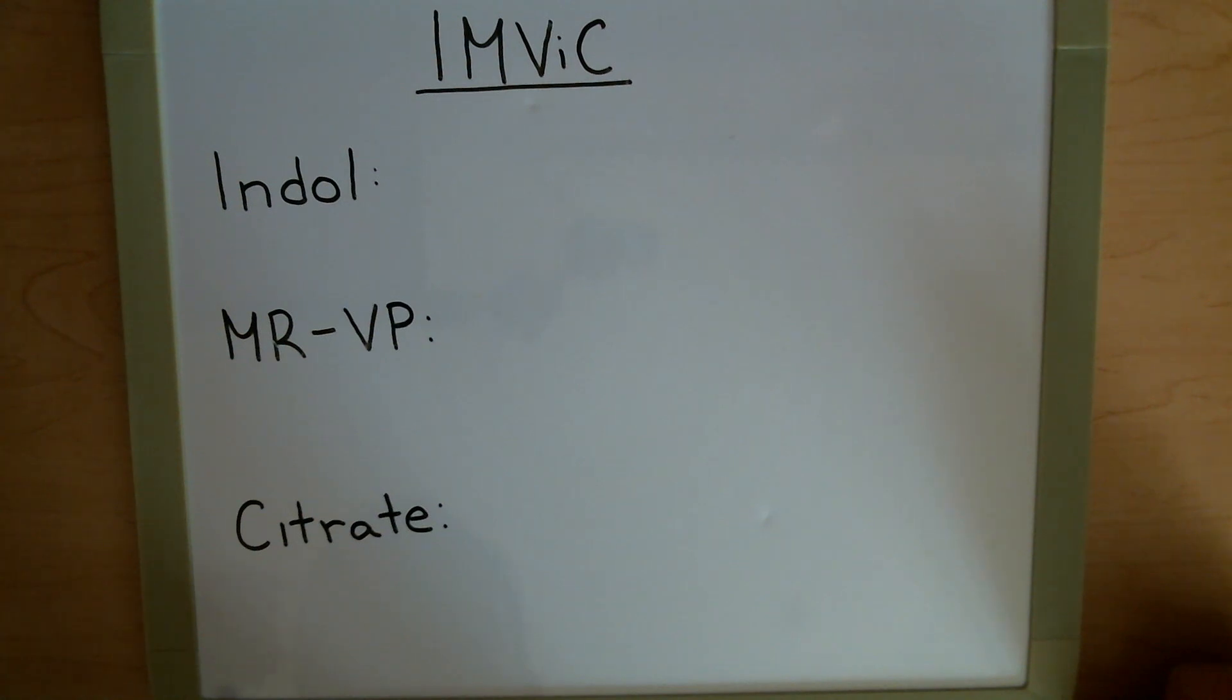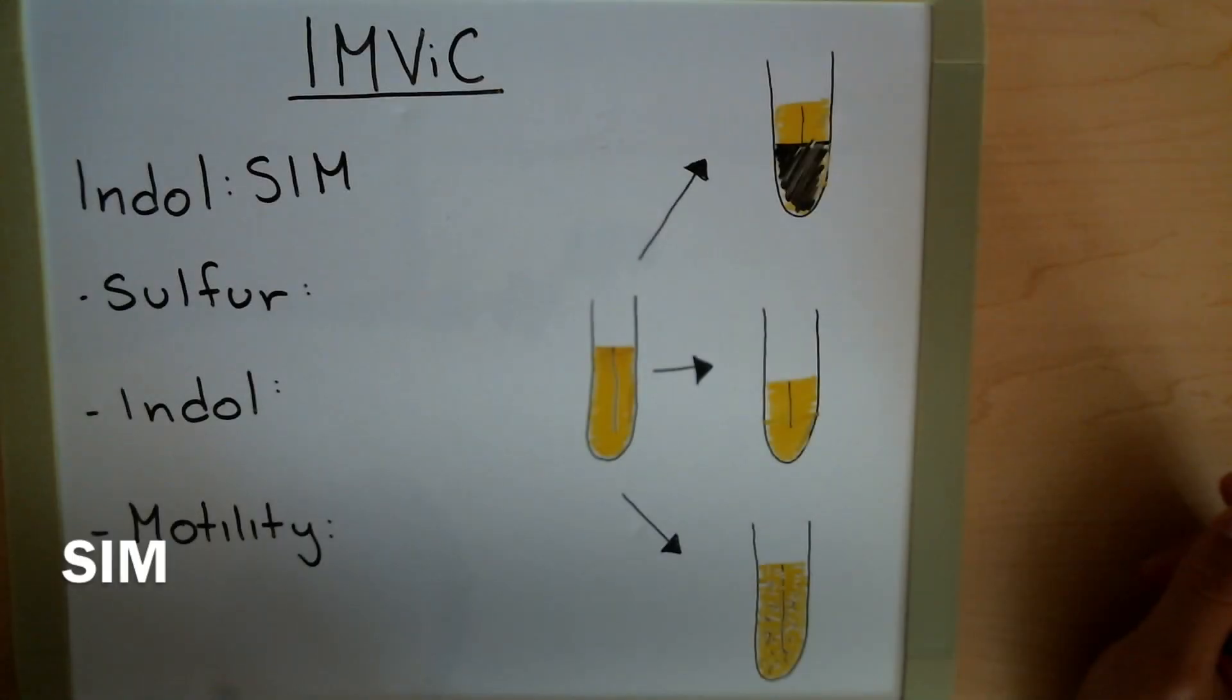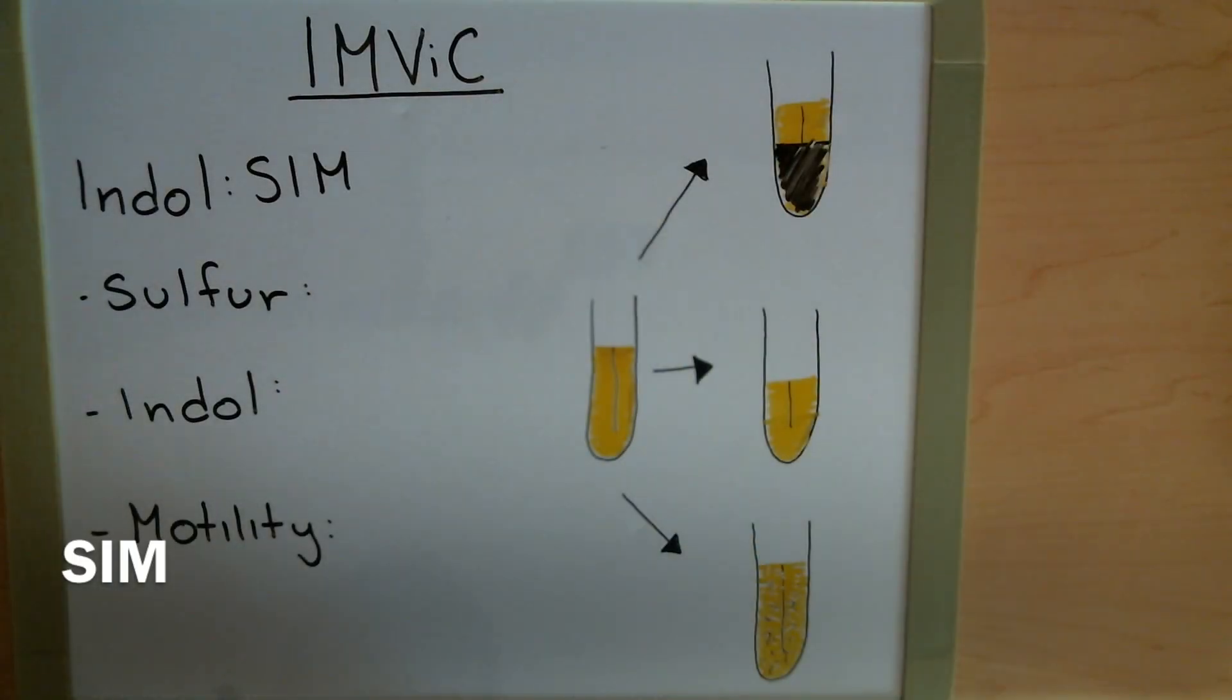MR-VP and Citrate use direct tests for themselves, while Indole we use in conjunction with another test called a SIM test. In order to test for Indole, we'll be using a SIM test. SIM stands for Sulfur, Indole, and Motility. These are the three things that the SIM test looks for.